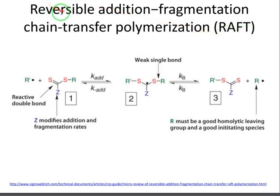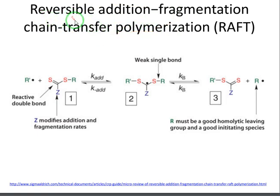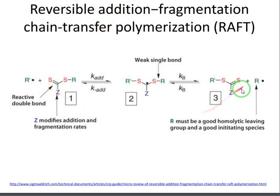Now we are going to talk about another polymerization technique called RAFT — the Reversible Addition Fragmentation Chain Transfer polymerization. I want to precisely explain what this phrase means: why is it reversible, why is it addition-fragmentation, and why is it chain transfer. Before going through these details, I want to show you an animation — a video of the person who invented this RAFT method for the first time, in Australia.